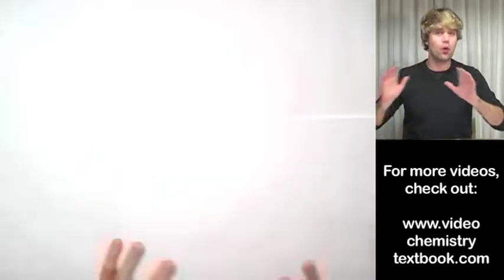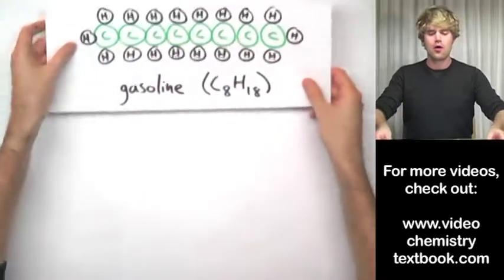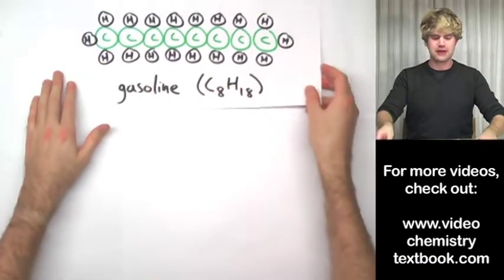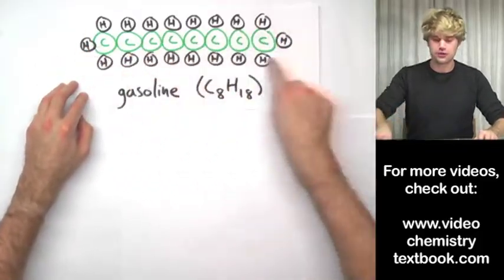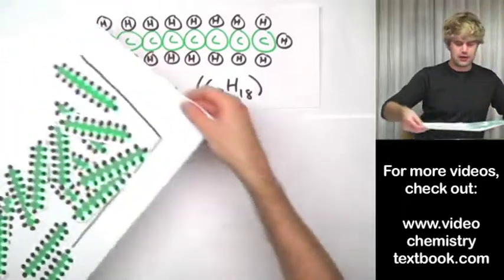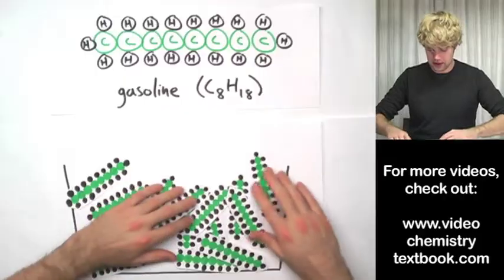Now, this isn't just true for water. So don't think that that's the only case. What you learned is exactly the same for any other molecule. Let's take a look at gasoline here. Gasoline is a little bit more of a complex molecule. It has eight carbons surrounded by 18 hydrogens. And if we could look at a tiny sample of gasoline, liquid gasoline, it would look like this.